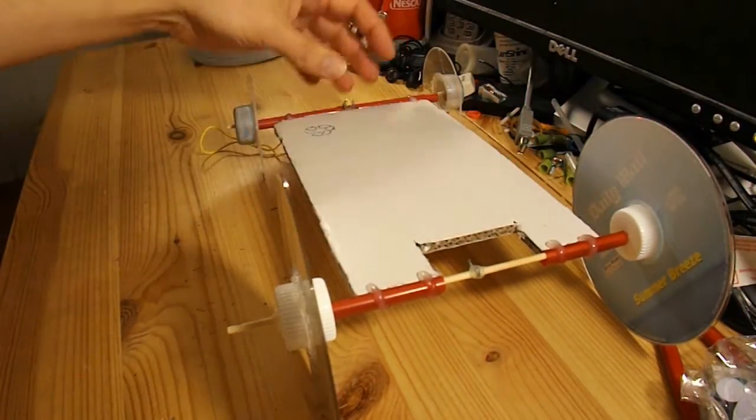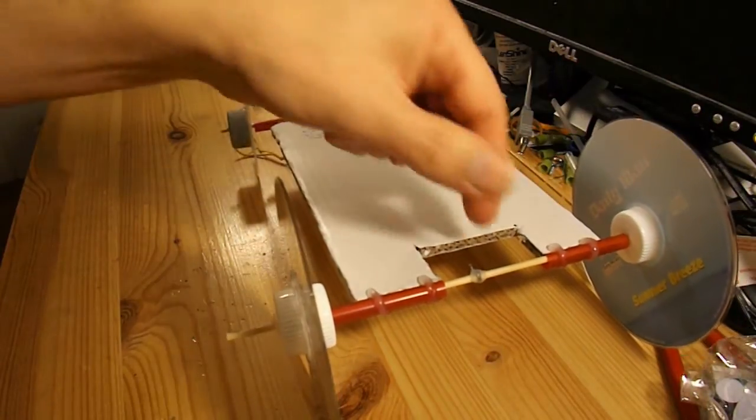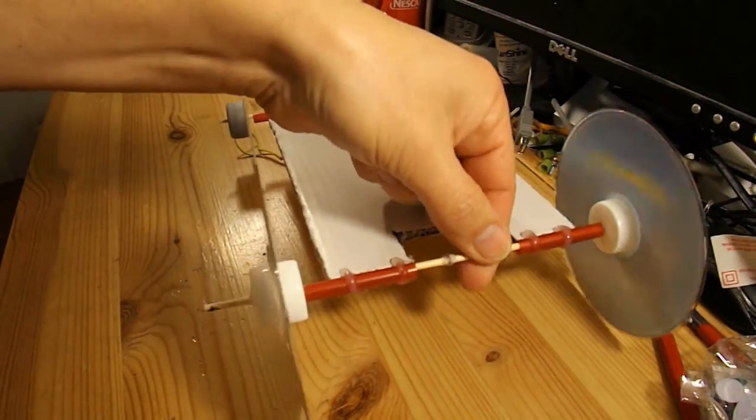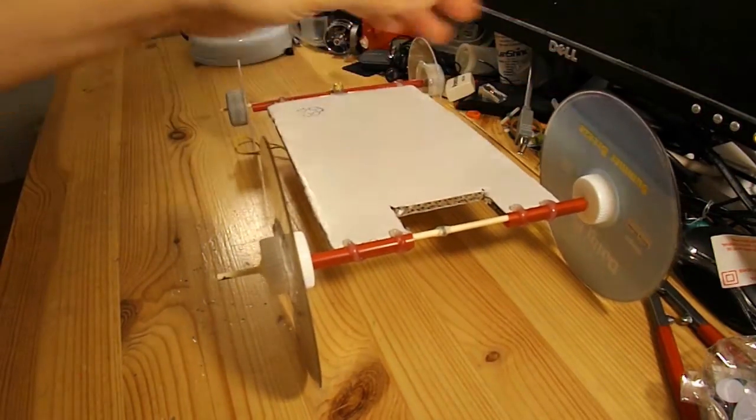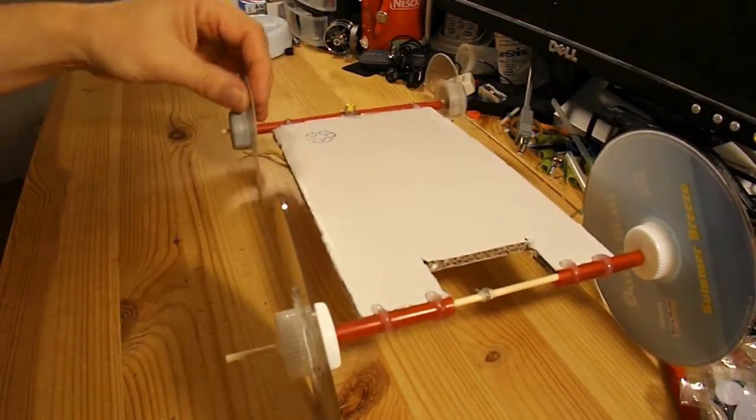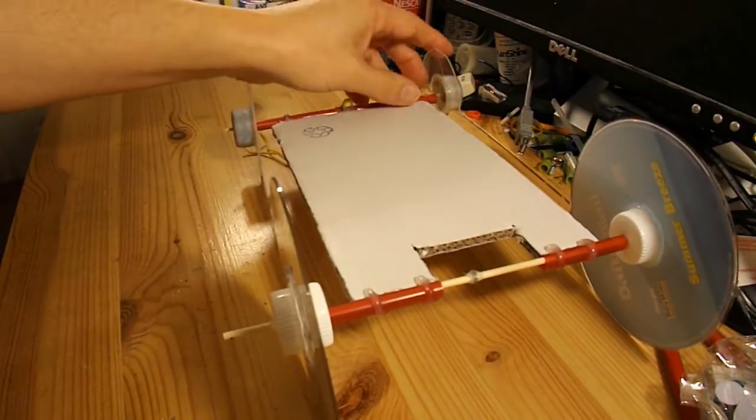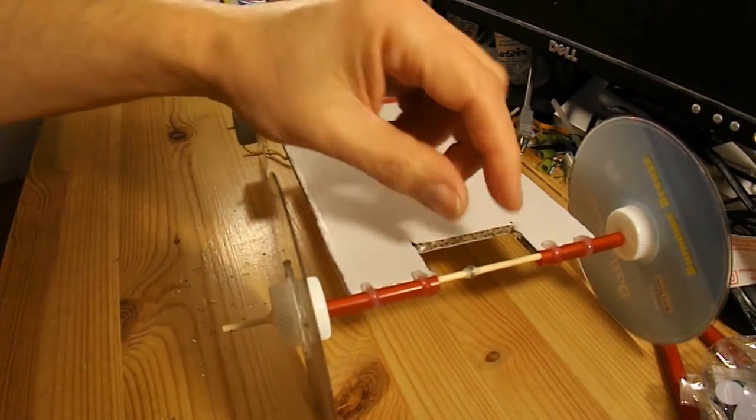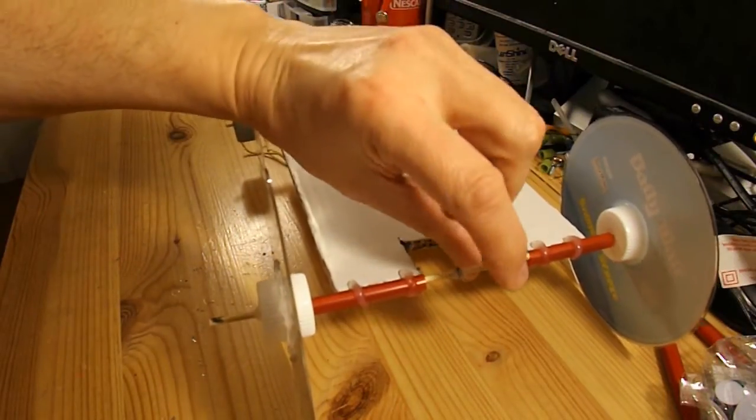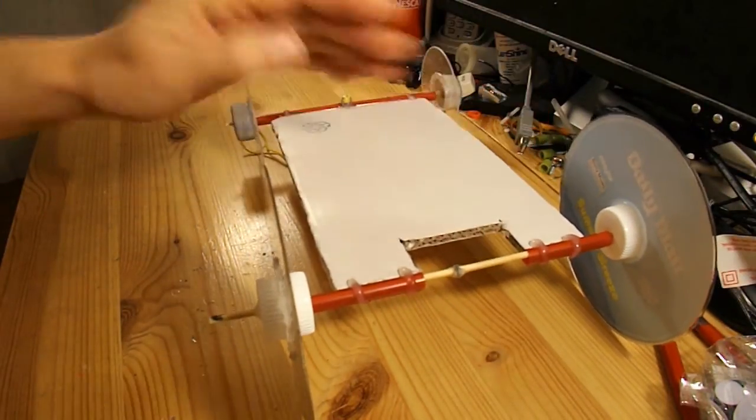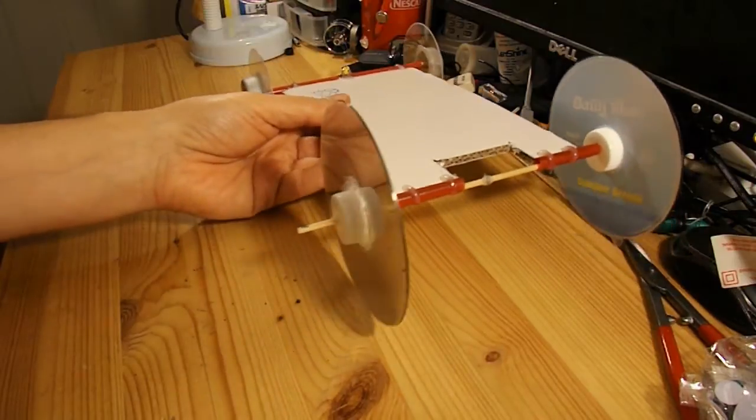It's cardboard, drinking straw axle tubes, barbecue skewers for the axles, CDs for the wheels, and cut down CDs for the front wheels. It's got a very narrow axle, so I'm going to thicken that up to give it better acceleration. So that's one car I'm going to use.